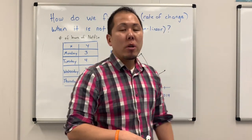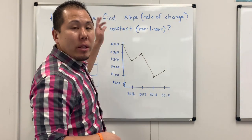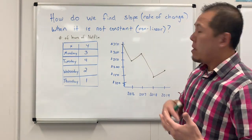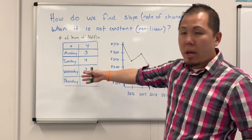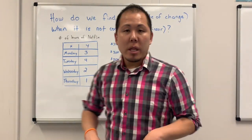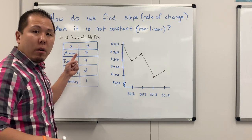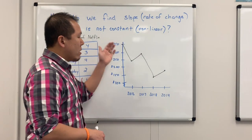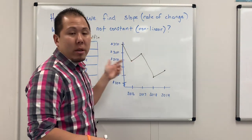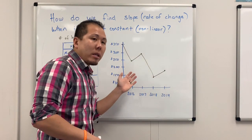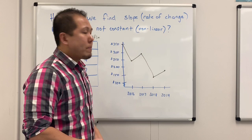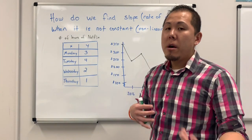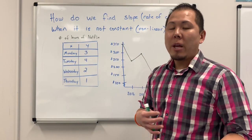What's up, Mathletes? It's MathLife here. Today we're going to talk about this concept of how do we find slope, aka rate of change, when it's not constant, meaning when it's nonlinear. So I have two examples here. I have a table and a graph. If we look at the table, notice it is not constant — it goes 3, 4, 2, 1. And if I look at the graph, it is definitely not linear; it doesn't make a straight line.